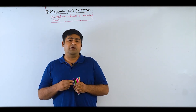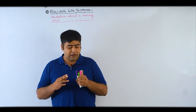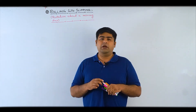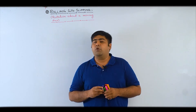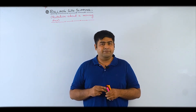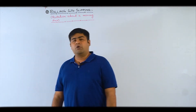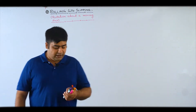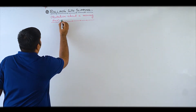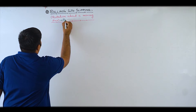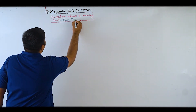After rotation with respect to fixed axis, we move on to rotation about a moving axis. It will be two parts: one is rolling with slipping and the other is rolling without slipping. So first of all let's do rolling without slipping.